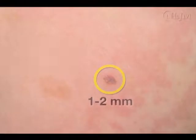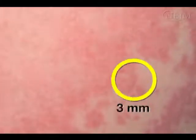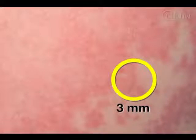For inflammatory eruptions, the punch biopsy sample should measure at least three millimeters in diameter to minimize sampling error and to provide sufficient tissue for any special staining that may be required.